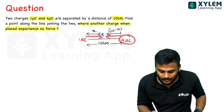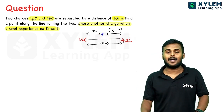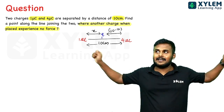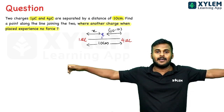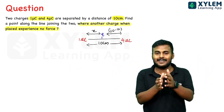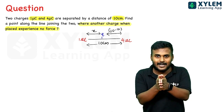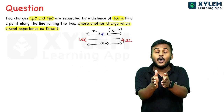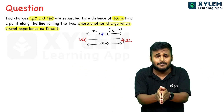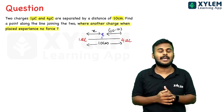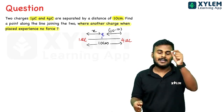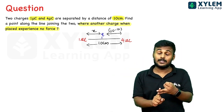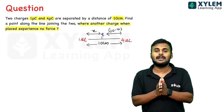We need to make the net force on q equal to zero. The force due to 1µC and the force due to 4µC must act in opposite directions on q. For this, q must be placed between the two charges so that the forces cancel out.